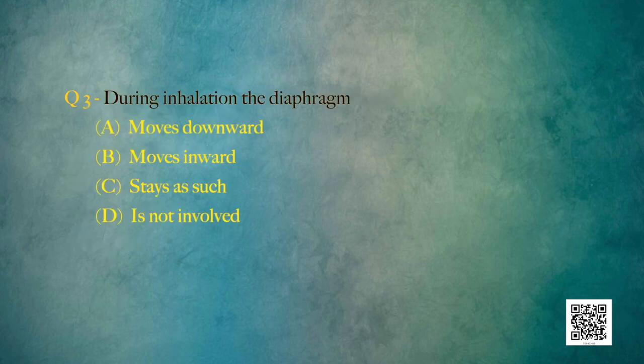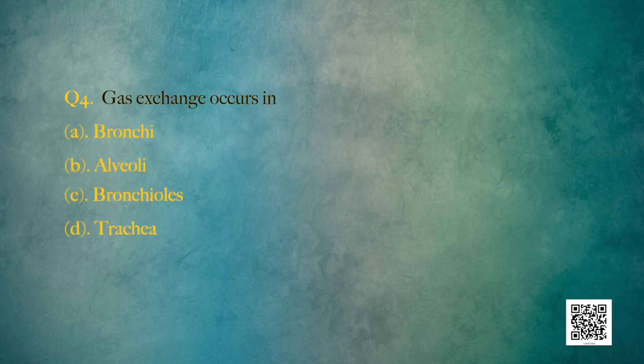Question 3: During inhalation, the diaphragm moves downwards, moves inward, stays as such, or is not involved at all? The answer is the diaphragm moves downward. Question 4: Gaseous exchange occurs in — bronchiate, alveoli, bronchioles, or trachea? The answer is alveoli. Great job, students!